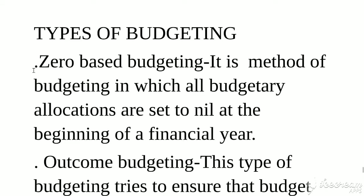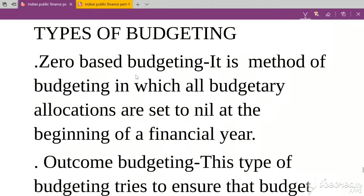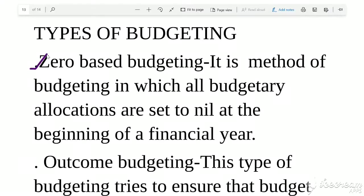Types of budgeting is a very important topic — zero-based budgeting has many questions. Zero-based budgeting is a method of budgeting in which all budgetary allocations are set to nil at the beginning of the financial year. When our financial year starts, the budget allocation is kept at zero and we start fresh. Zero-based budgeting means we begin absolutely from scratch, from nil.